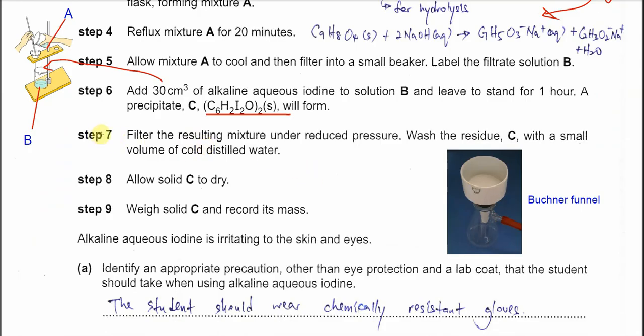For this step, we are going to use a slightly different funnel. We will put the filter paper on this funnel, and of course the flask will connect to a pump, the suction pump. Because it is under reduced pressure with the suction pump, the filtration can happen faster. We can get the solid residue C faster. The solid will be on the filter paper after filtration and we need to wash with cold distilled water.